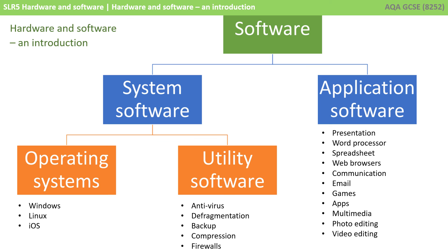Utility software includes things like antivirus programs, defragmentation, programs that do backup, compression, and firewalls. And application software is really everything else. It covers a really broad range of software, from presentation tools to word processors, through to web browsers, communications, games, multimedia, and much more.